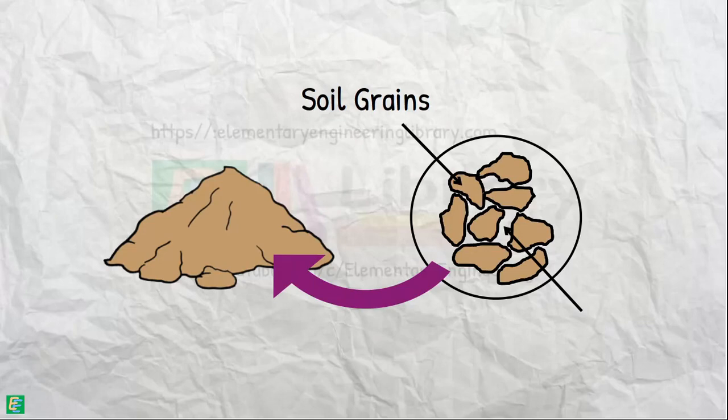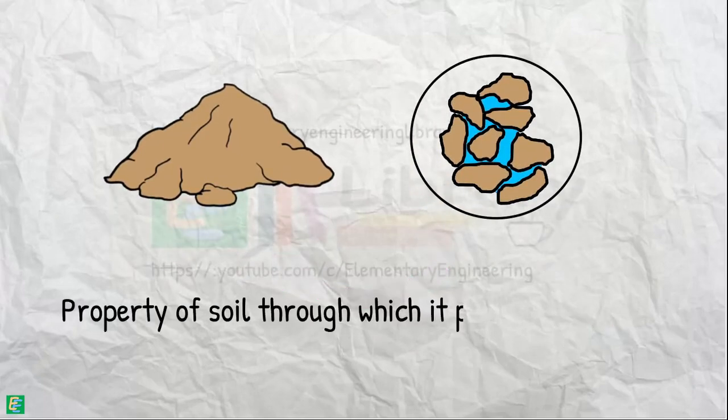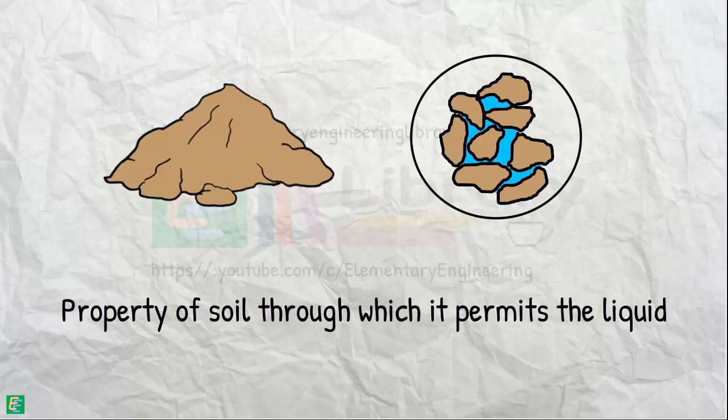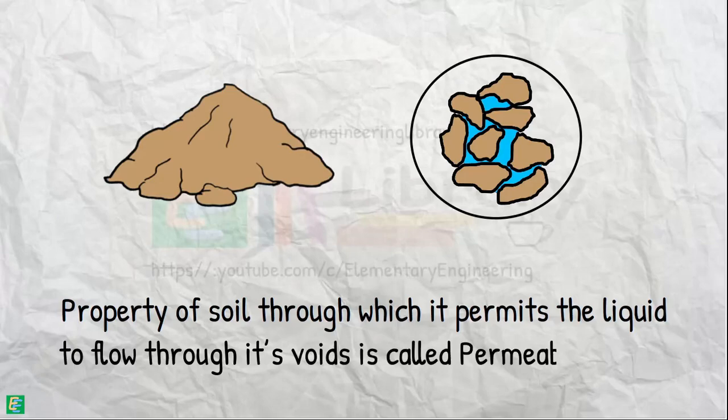We call these spaces voids. Water can flow through these voids. The property of the soil by which it permits water or any other liquid to flow through its voids is called permeability.